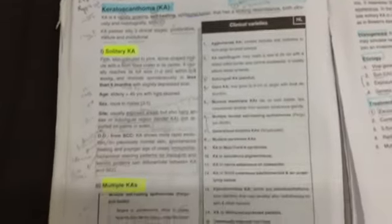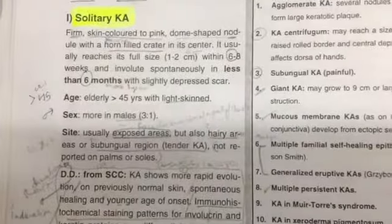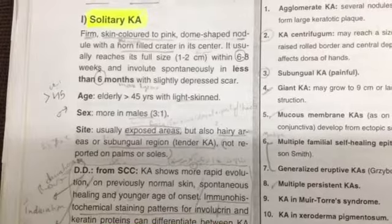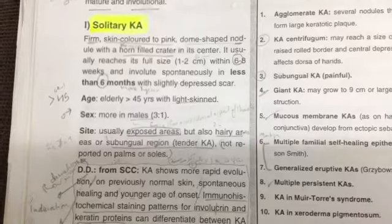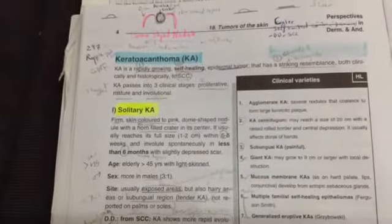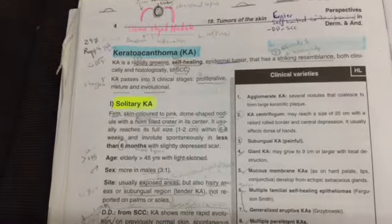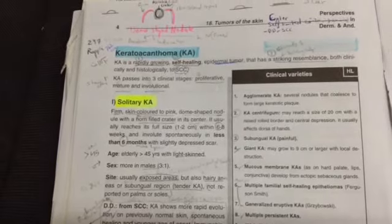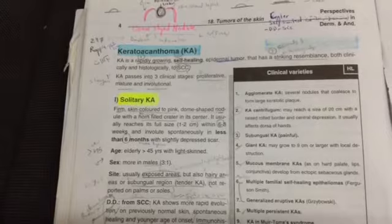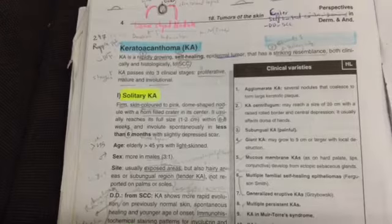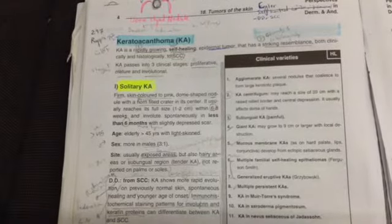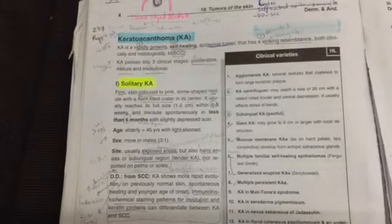Solitary keratoacanthoma is a firm, skin-colored to pink, dome-shaped nodule with a horn-filled crater in its center. It usually reaches its full size of one to two centimeters within six to eight weeks, and involutes spontaneously in less than six months leaving a slightly depressed scar. Age of onset is usually over 45 years in light-skinned individuals, more common in males (3:1). Site is usually exposed areas — face, forearms, dorsal hands, or subungual region; not reported on palms and soles. Differential diagnosis from squamous cell carcinoma is based on duration, induration, and lymph node status; keratoacanthoma shows more rapid evolution on previously normal skin, spontaneous healing, younger age of onset, and distinct immunohistochemical staining of involucrin and keratin proteins.